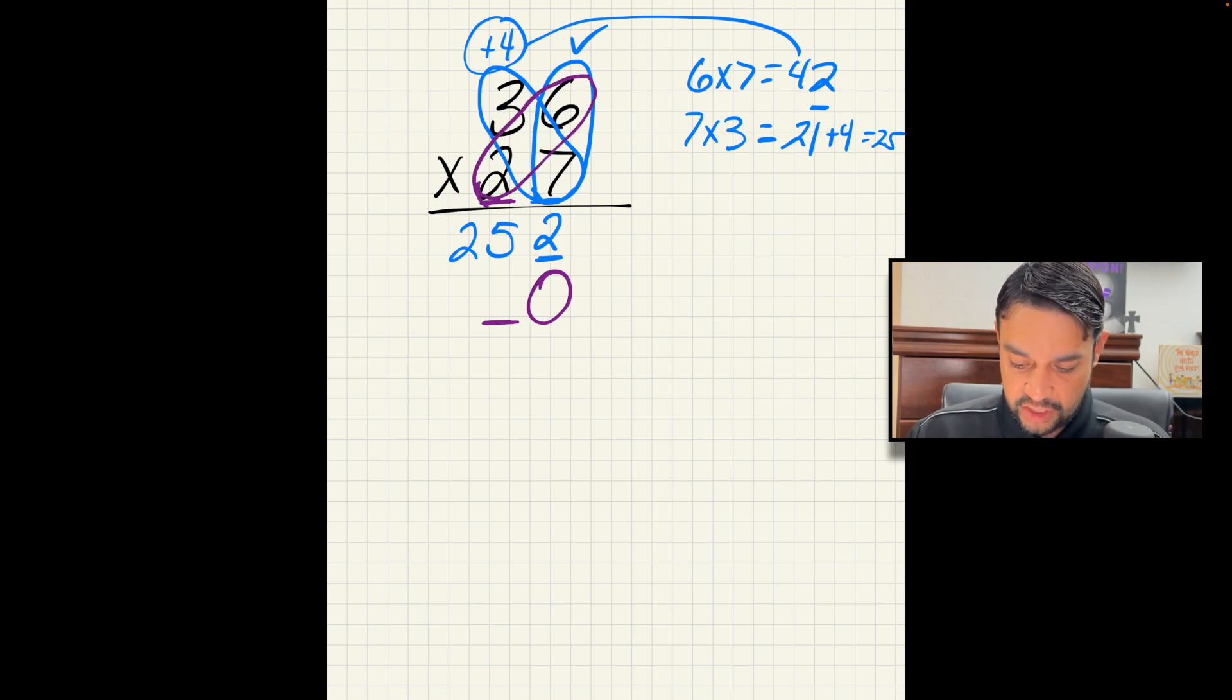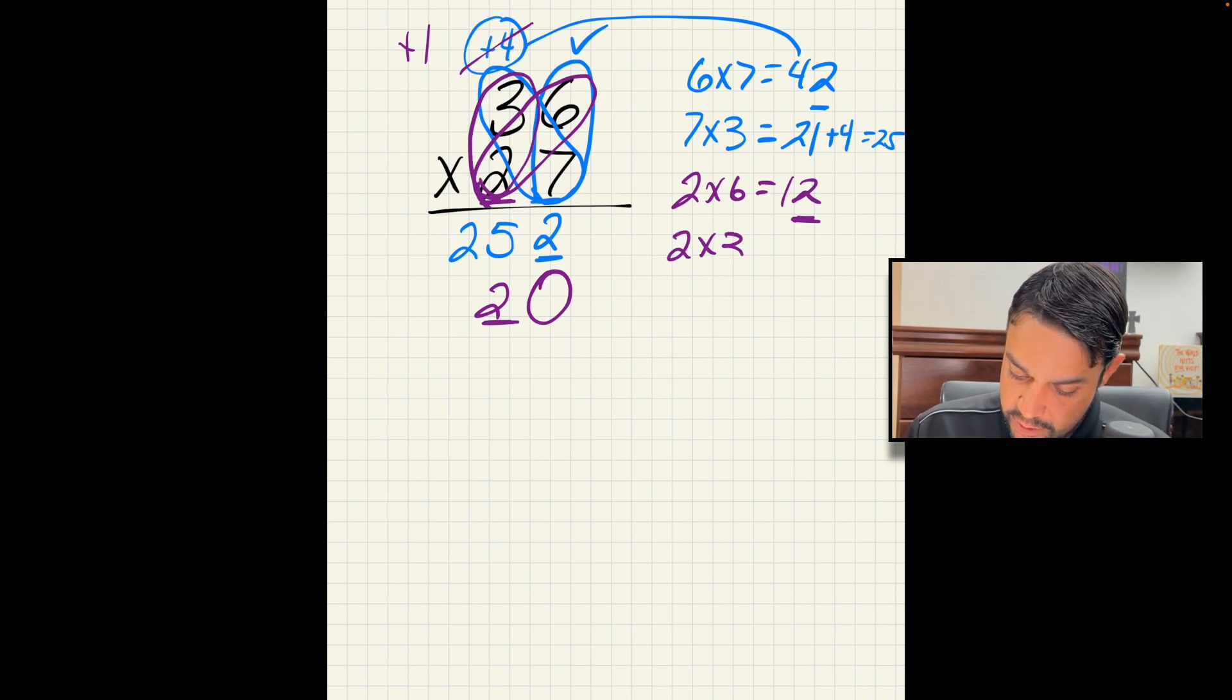2 times 6, well that's 12. But we can only have one place value answer, because we've only multiplied one place value. And that place value is the 2. And we're going to regroup our 1. 2 times 3, 6. Can't forget our 1. Plus 1, 7.